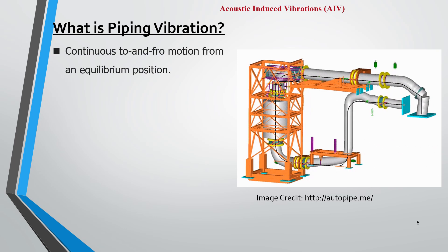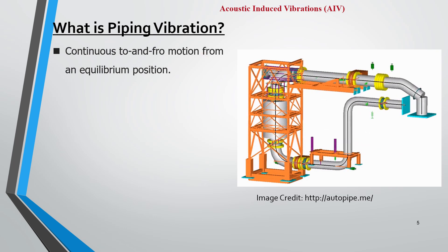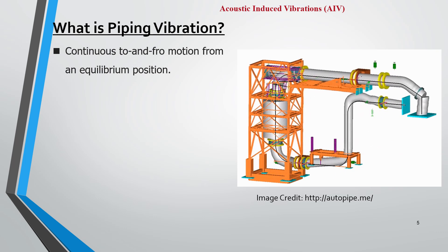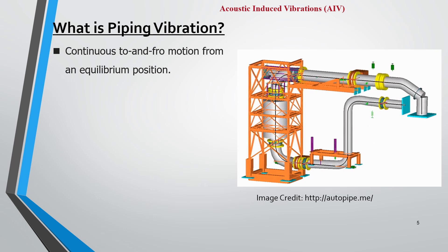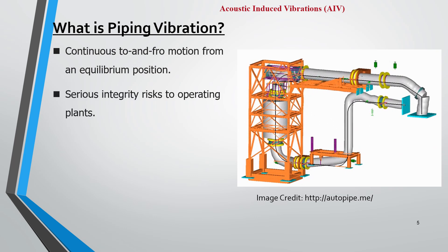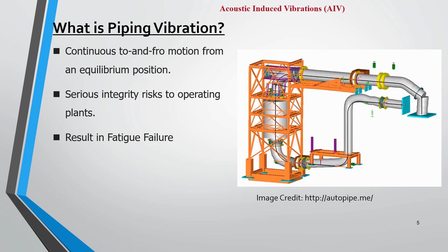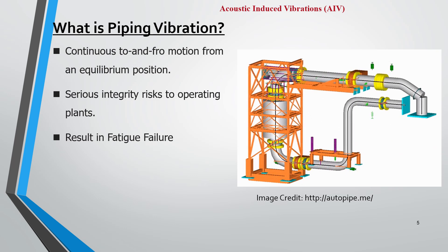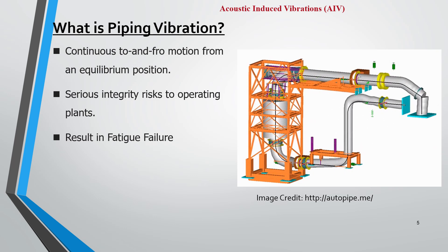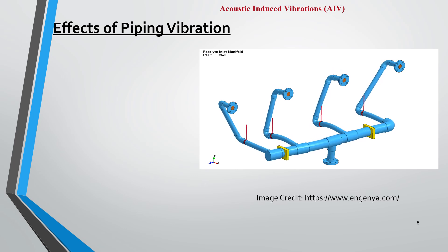Piping vibration is defined as a continuous to-and-fro motion from an equilibrium position. From an equilibrium position, the motion that occurs to and fro in a piping system is considered as piping vibration. Piping vibration is a serious integrity risk to operating plants as it may result in fatigue failure if not resolved. During the design stage we must make all necessary efforts so that vibration can be resolved.